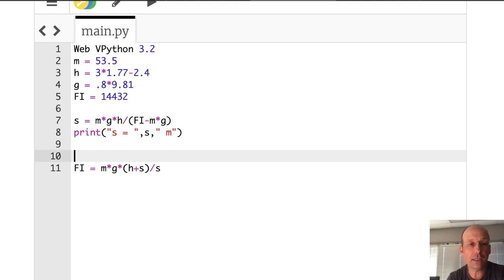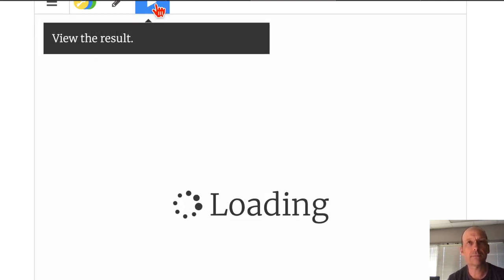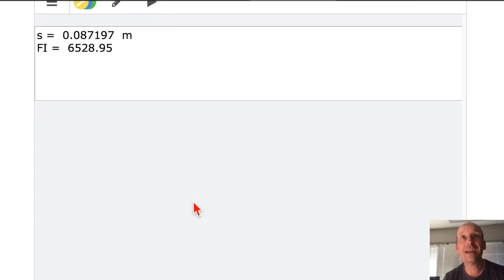If I do that, I can print this, Fi, and let's run it. So in that case I get 6,000 newtons, much lower. I don't know about how to break bones and stuff like that, but I would think it would depend on the pressure, not the force. But there you go. That's Padme jumping off the thing.